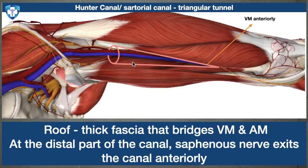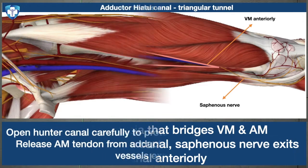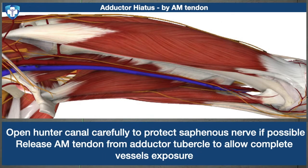We separate the vessels within the canal and protect them. As we proceed distally, the saphenous nerve comes anteriorly and we identify and protect it. After retracting the vastus medialis anteriorly and sartorius posteriorly, we can see an opening in the adductor magnus muscle — the vessels are entering into this opening, which is called the adductor hiatus.